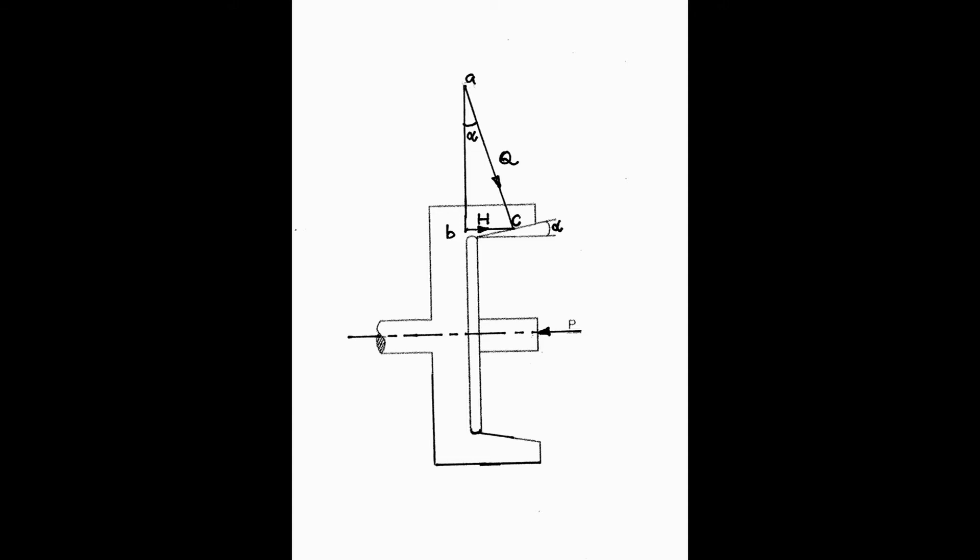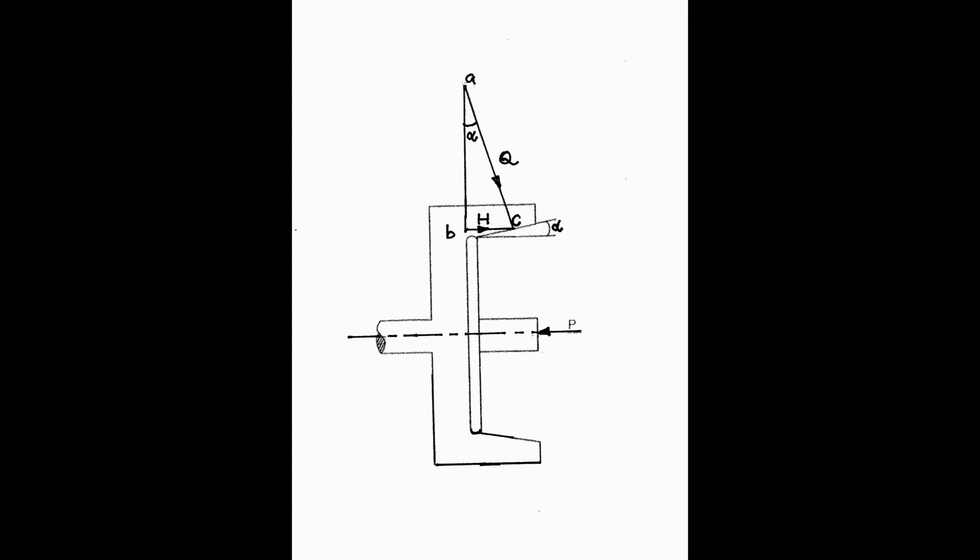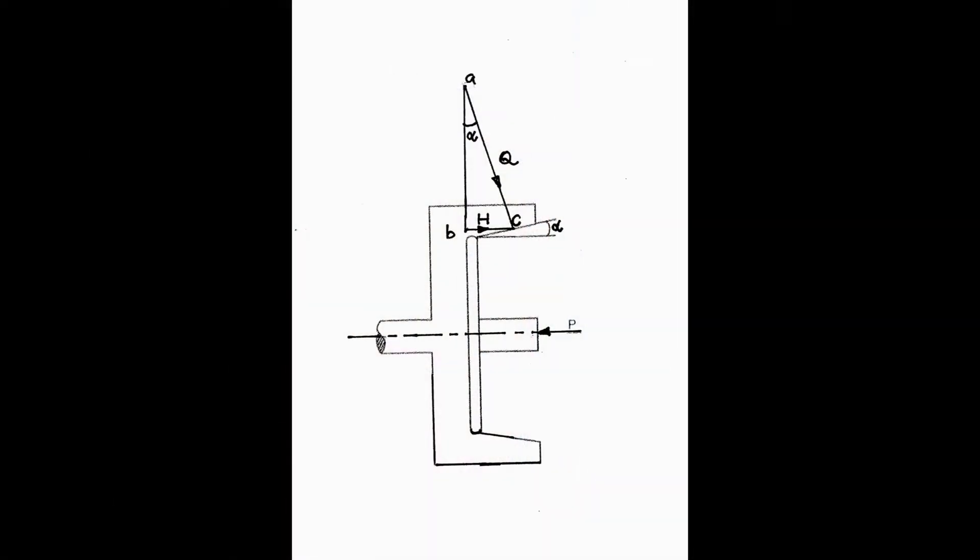Force P is acting axially as shown in the diagram, and it can be resolved into horizontal and vertical components, H and Q. Q is the force acting perpendicularly to the frictional surface. From the diagram, the angle between H and Q is equal to alpha, that is the half cone angle. It may be noted that H is equal and opposite to P.